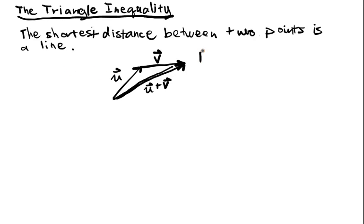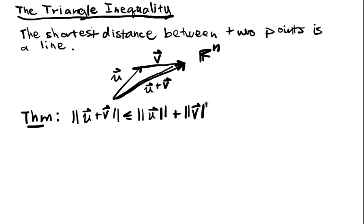And it turns out that this works even in R^n, this is true even in R^n, and it's a really useful fact, it's used quite a lot actually, it's very common. So the theorem is that the norm of u plus v is less than or equal to the norm of u plus the norm of v.